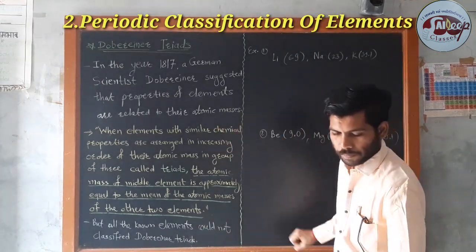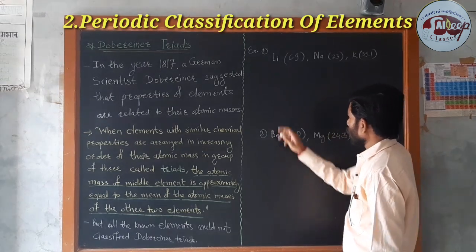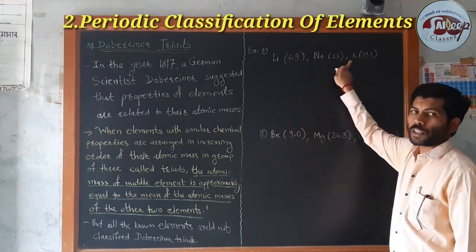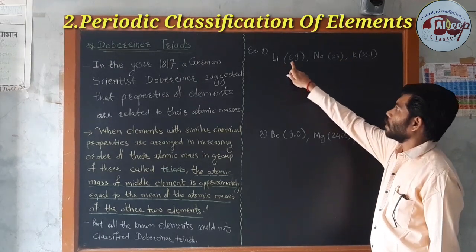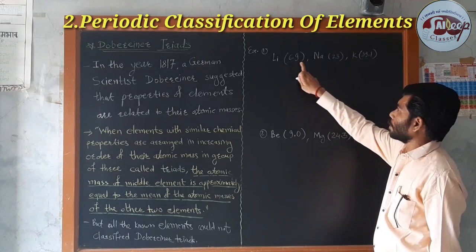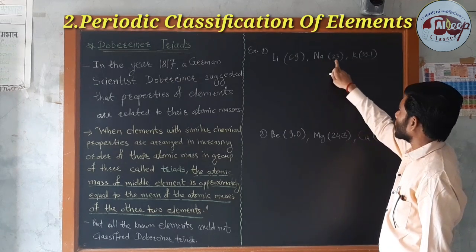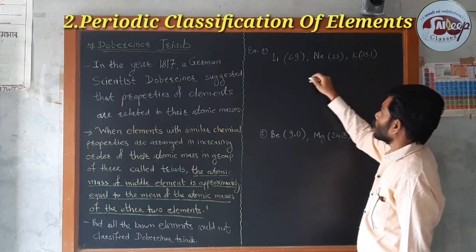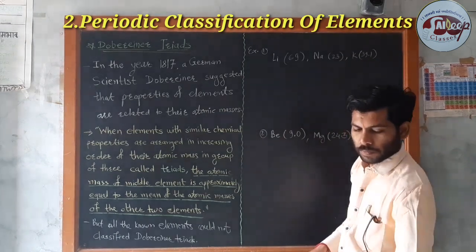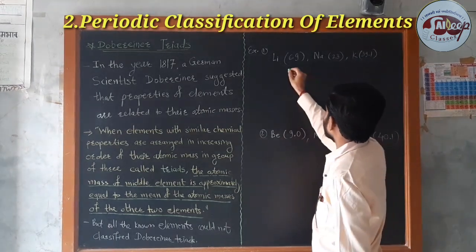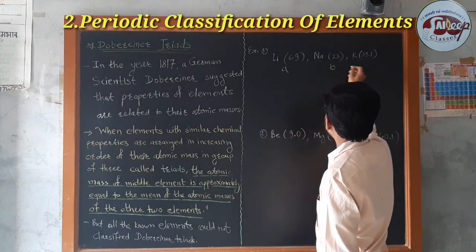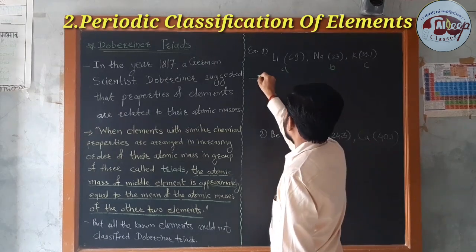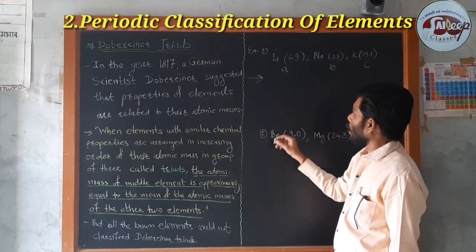Now, let us look at examples. First example: lithium, sodium, and potassium. Lithium has atomic mass 6.9, sodium 23, and potassium 39.1. Suppose lithium is A, sodium is B, and potassium is C. What is the solution using Dobereiner's Triads?